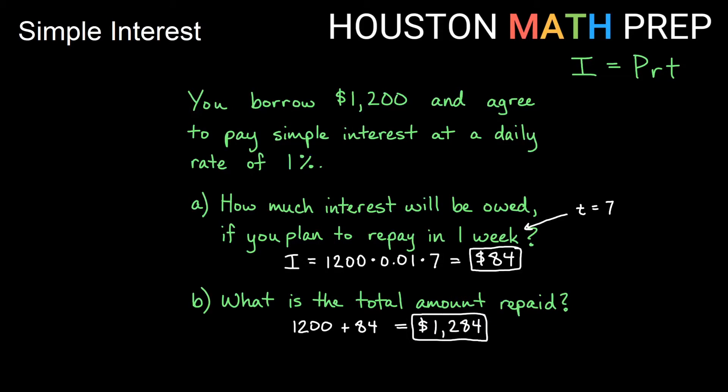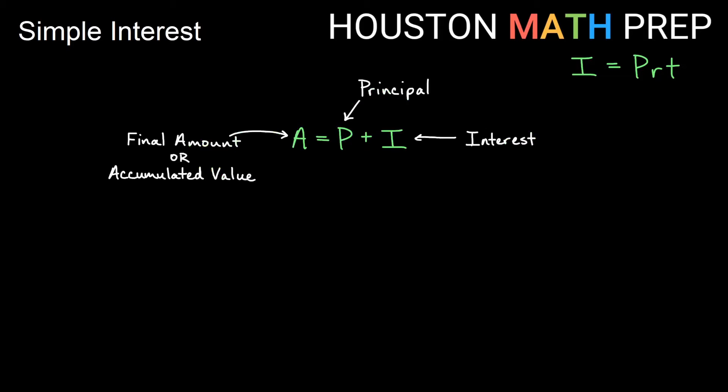If we want to look at this total amount being repaid, then that's our final amount. Sometimes it's referred to as an accumulated value, but it's usually represented by A in formulas. So if I'm paying back an end amount, that needs to include the starting amount plus the interest. So this was in our last example, our $1,284 was our original $1,200 plus the $84 in interest there.